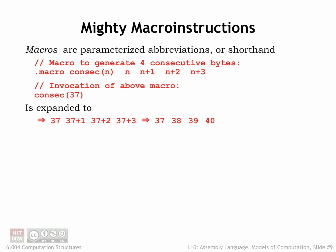Let's take a closer look at how macros work in UASM. Here we see the definition of the macro CONSEC, which has a single parameter n. The body of the macro is a sequence of four expressions.